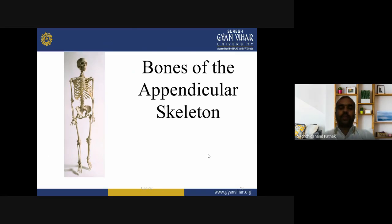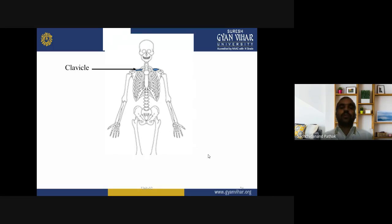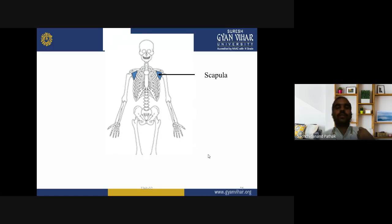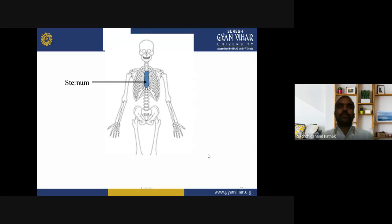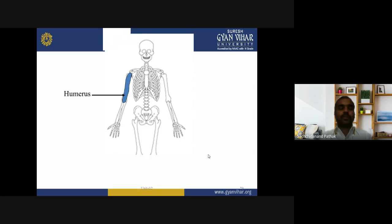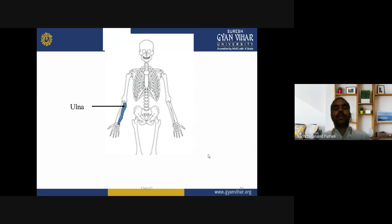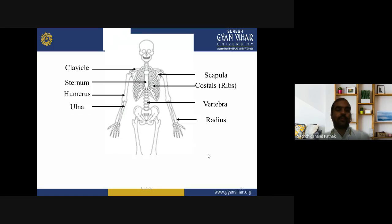Now the bones of the appendicular skeleton: the clavicle (also called the collarbone or beauty bone), then the scapula (flat bone at the back side), coastal ribs, sternum (the middle portion), vertebra, humerus, ulna, radius, and the bones of the forearm. Radius is on the thumb side while ulna is the other bone. The appendicular skeleton includes clavicle, sternum, humerus, ulna, scapula, coastal ribs, vertebra, and radius.